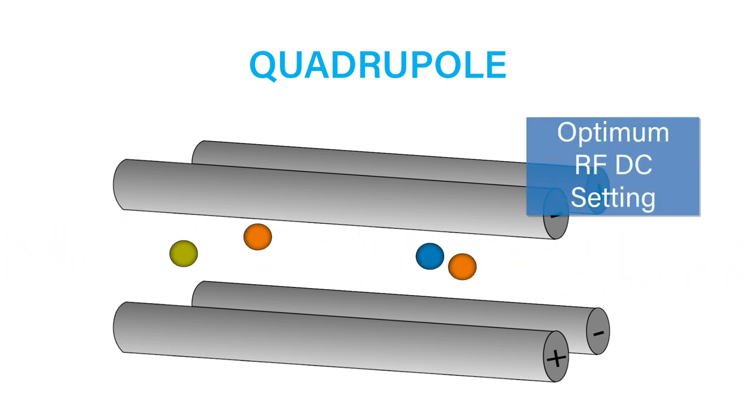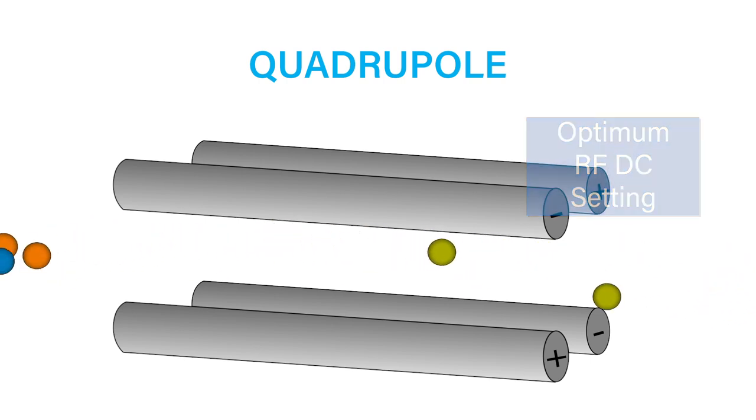Each mass-to-charge ratio has an optimum RF-DC setting, which creates a stable trajectory through the quadrupole. Thus, the quadrupole can be programmed so that only a specific mass-to-charge ratio is stable down the length of the quadrupole.